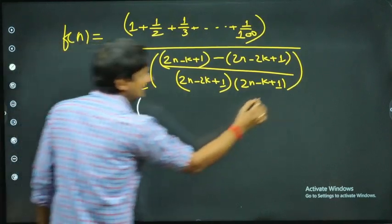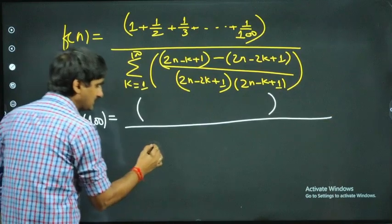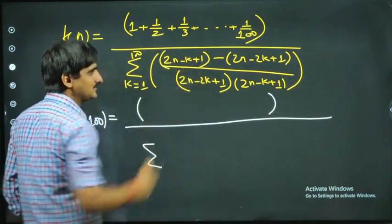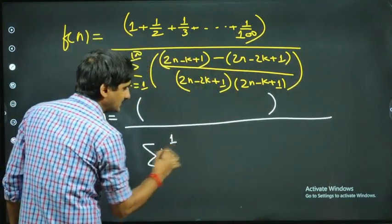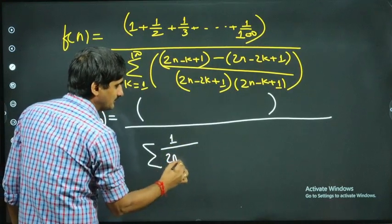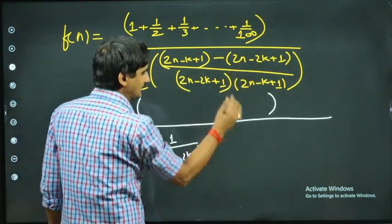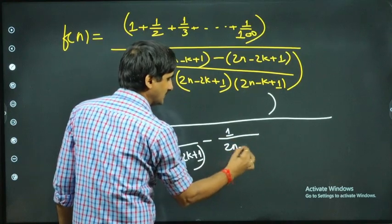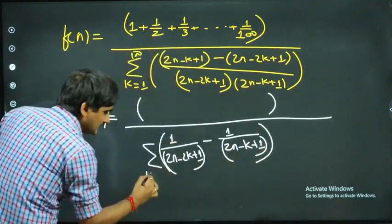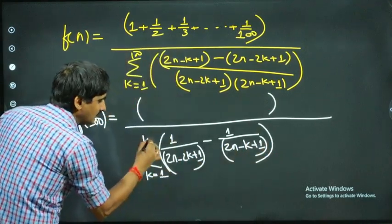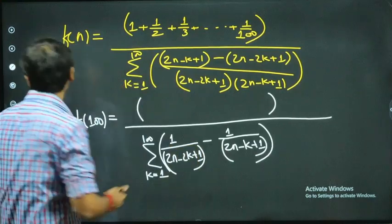So now for 200·f(100): I'm leaving the numerator as is, but for the denominator I'll break it into two parts. The first term over the denominator cancels factors to give 1/(2n - 2k + 1), minus the second term over the denominator giving 1/(2n - k + 1), as k goes from 1 to 100.